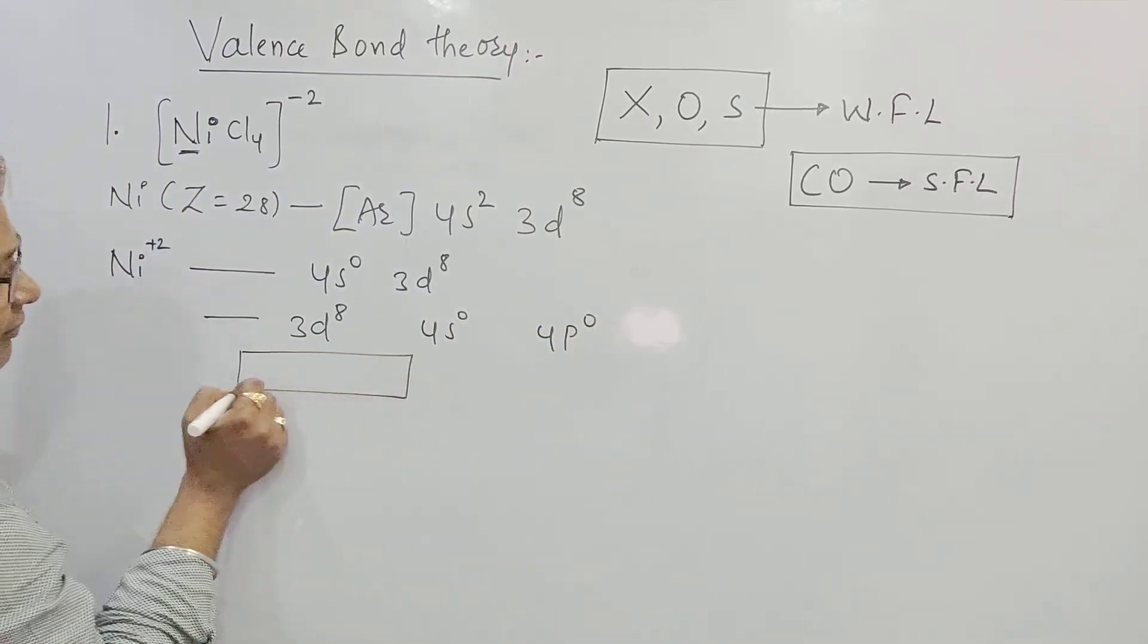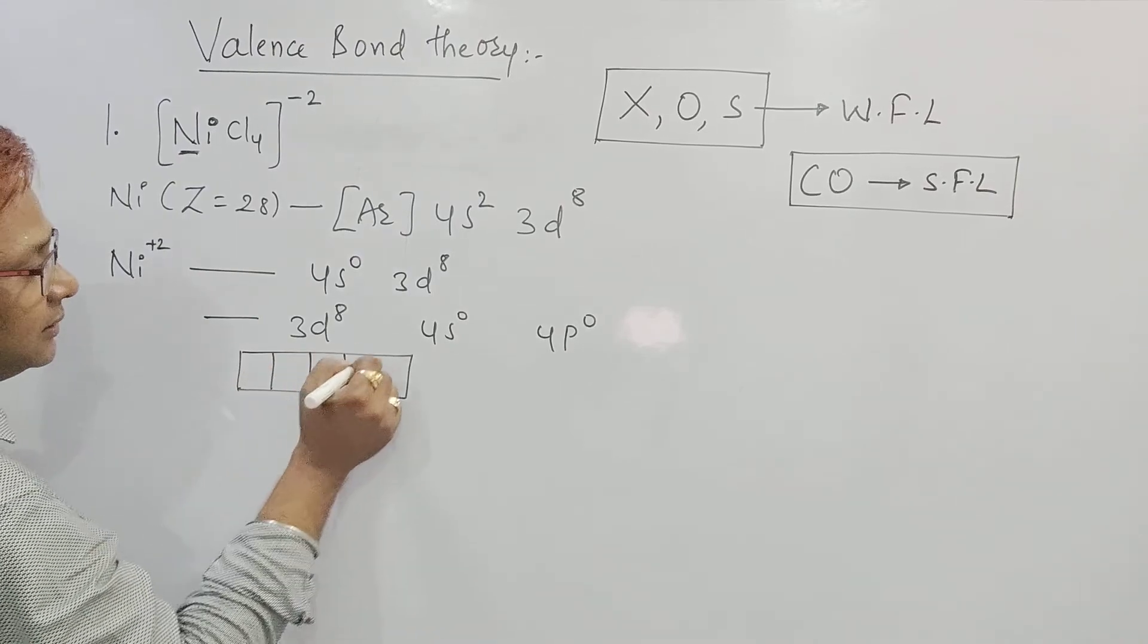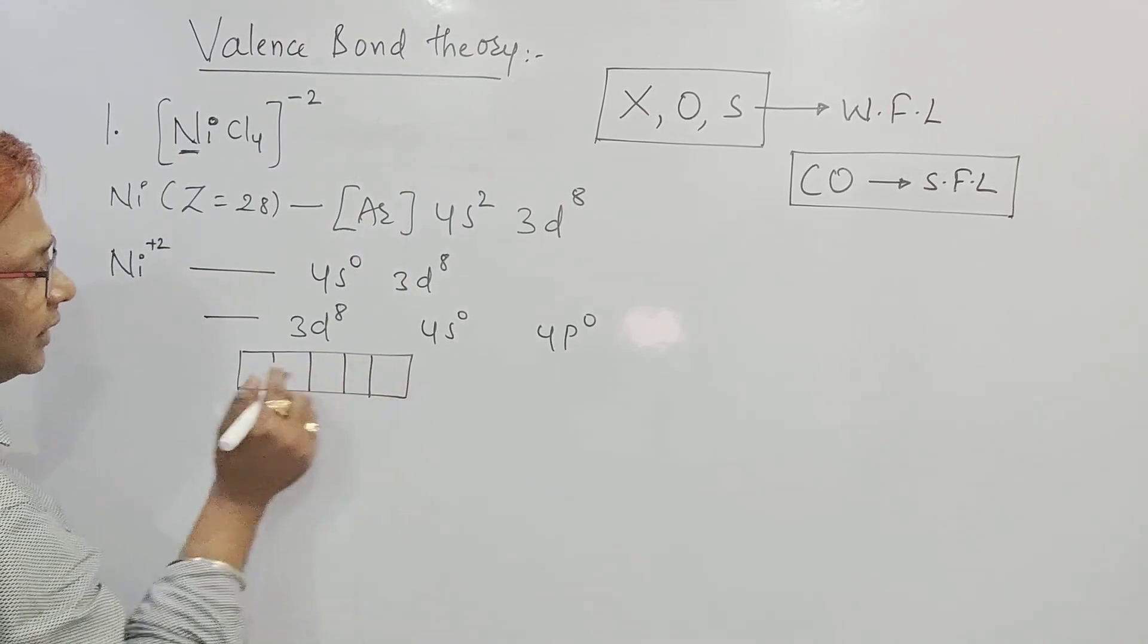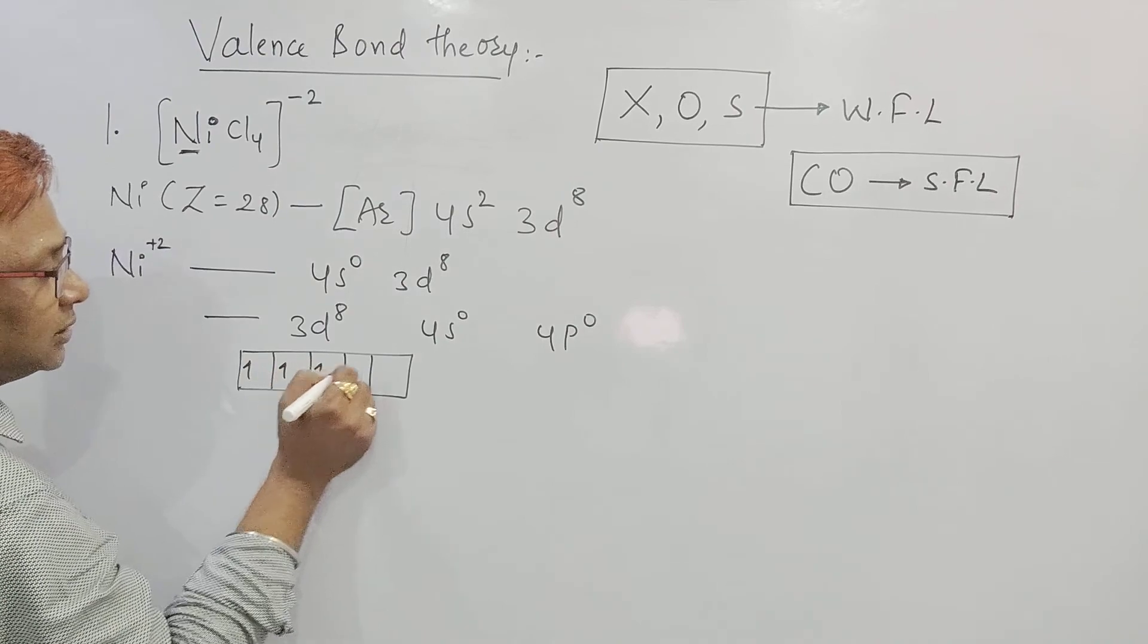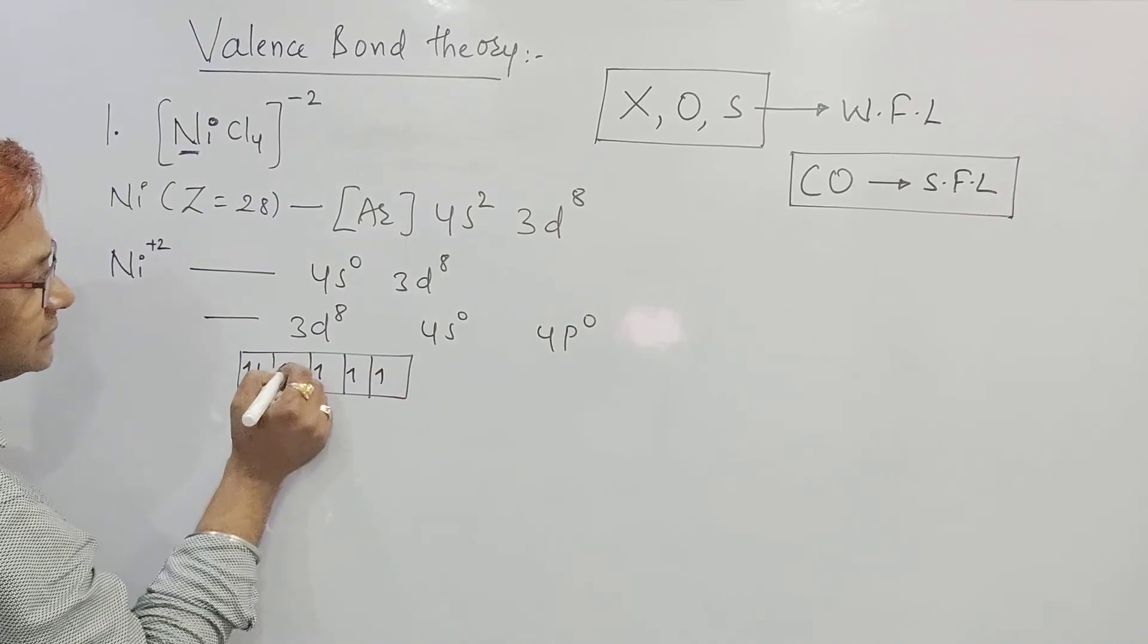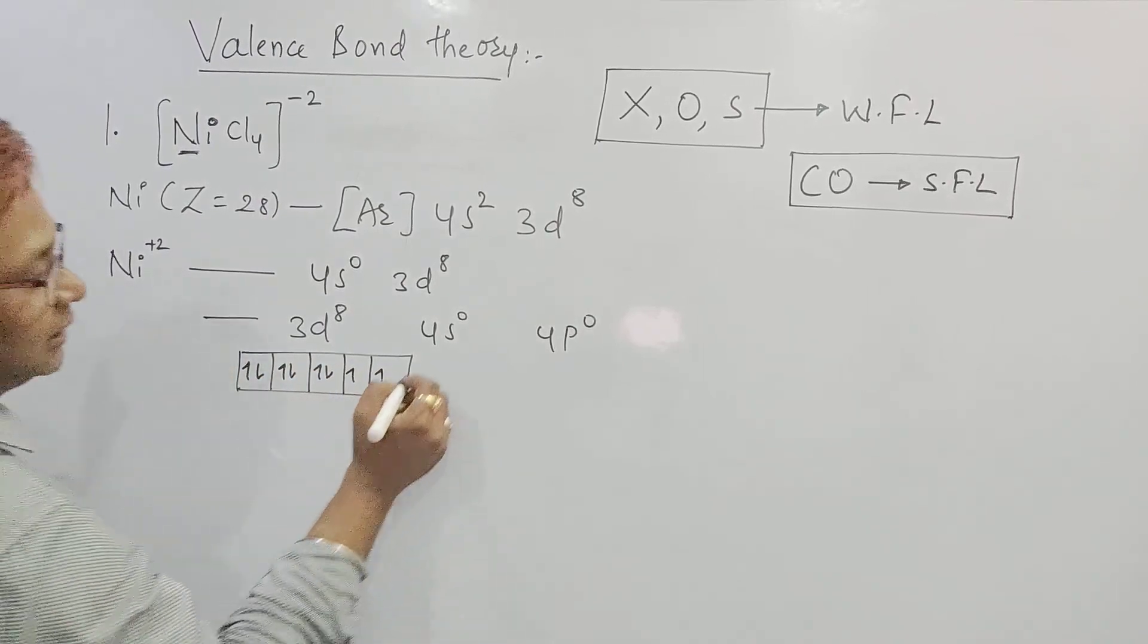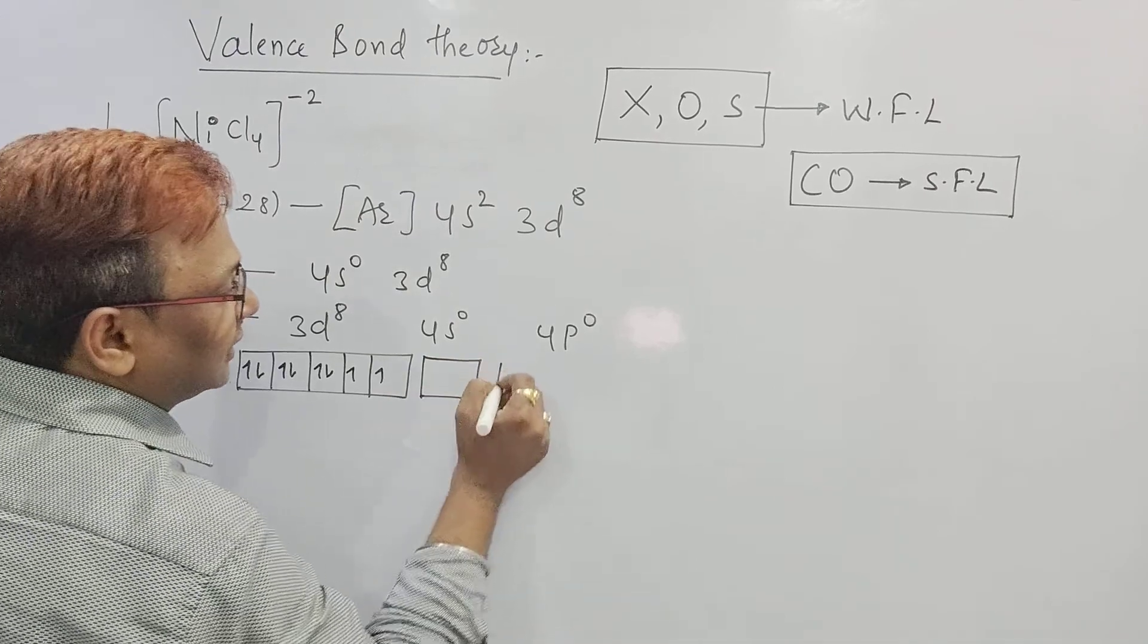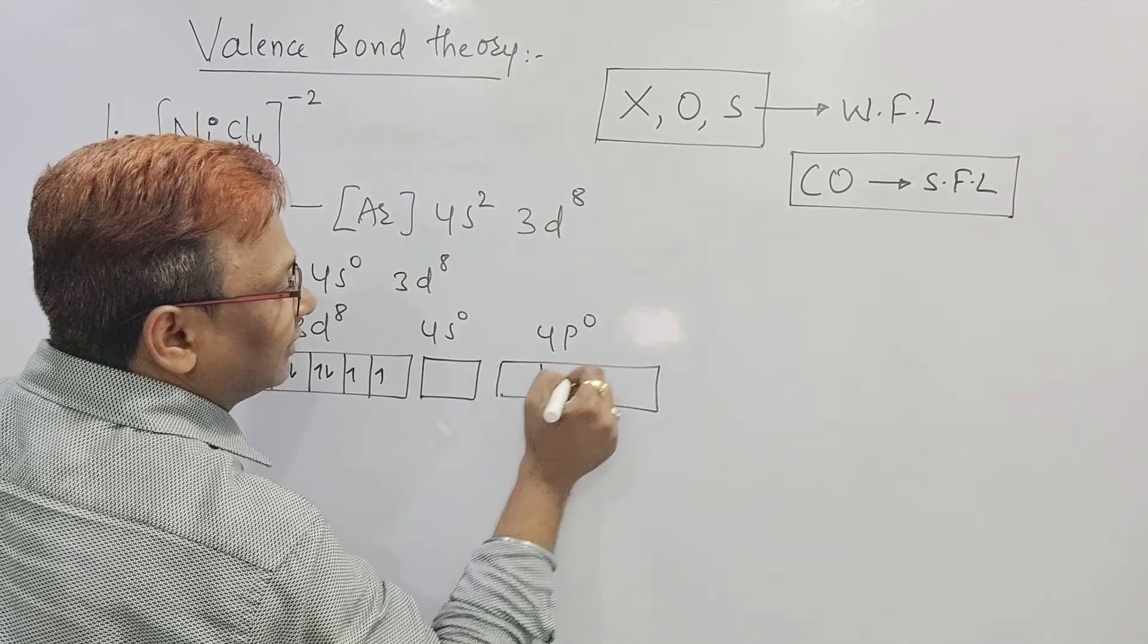Now in d, we are having 5 degenerate orbitals. 1, 2, 3, 4, 5. We have 1, 2, 3, 4, 5, 6, 7, and 8 electrons. S orbital, only 1 is there. And P orbital, we are having 3.